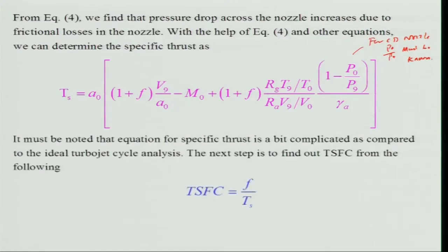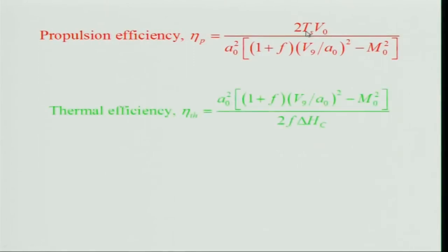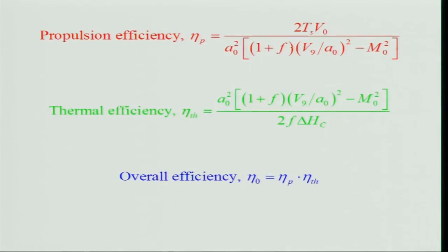It must be noted that the specific thrust equation for the real cycle is considerably more complex compared to the ideal turbojet. The next step is to find the TSFC (Thrust Specific Fuel Consumption), and following that, propulsive efficiency η_P = F·V_0/(T·a_0), thermal efficiency, and overall efficiency — all following a similar approach to the ideal cycle, with the (1+f) factor appearing.